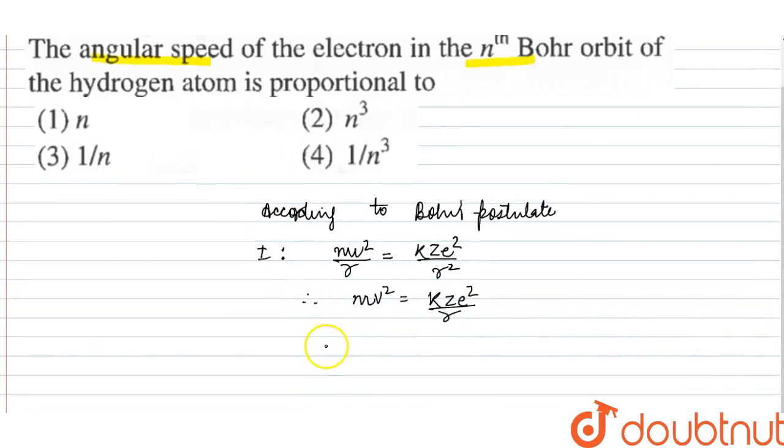The second postulate says that the angular momentum of the electron in an orbit is an integral multiple of h/2π. So it equals nh/2π.